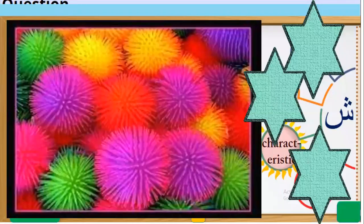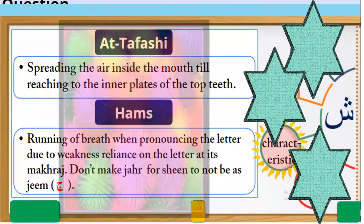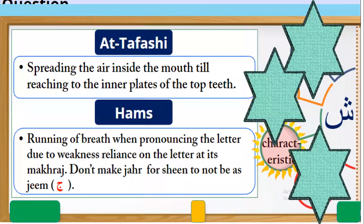What is the characteristic of Sheen? Sha, sha. Number one: at-tafashi — the spreading of air inside the mouth, still reaching to the inner place of the tube of the top teeth. Ash, ash, ash.